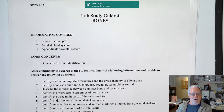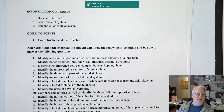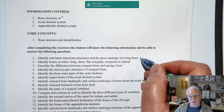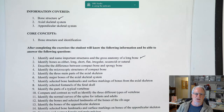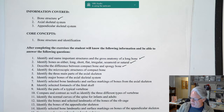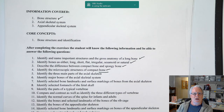What you need to know for the lab exam is the structure of bone as covered today, and then identification — which includes the names of bones and various landmarks on those bones. Today's lecture covers: identifying and naming the structures and gross anatomy of a long bone; classifying bones as long, short, flat, irregular, sesamoid, or sutural; describing the difference between compact and spongy bone; and identifying the microscopic structures of compact bone.